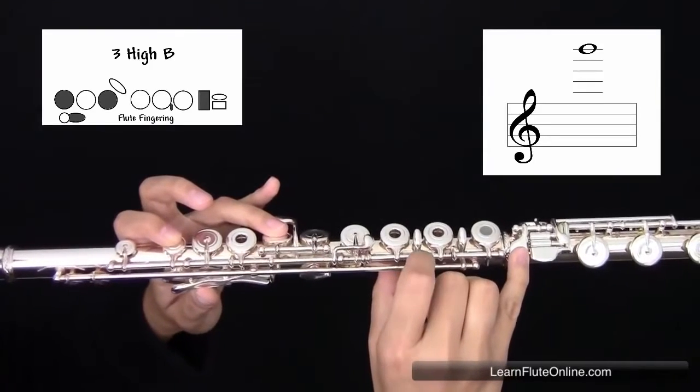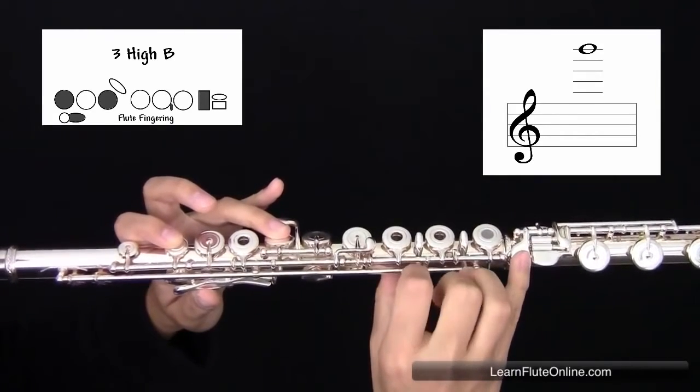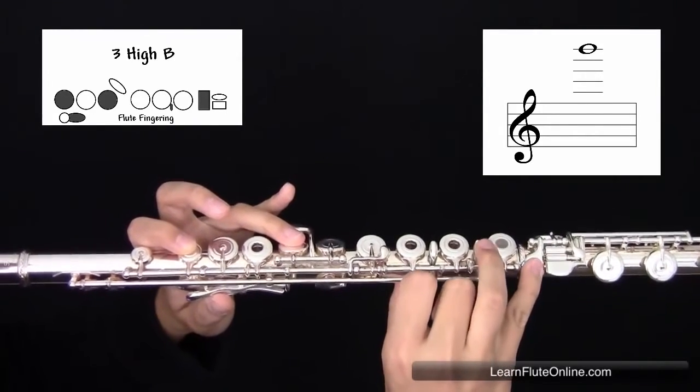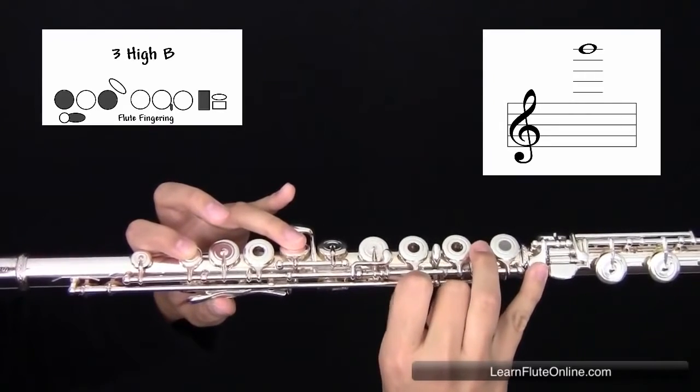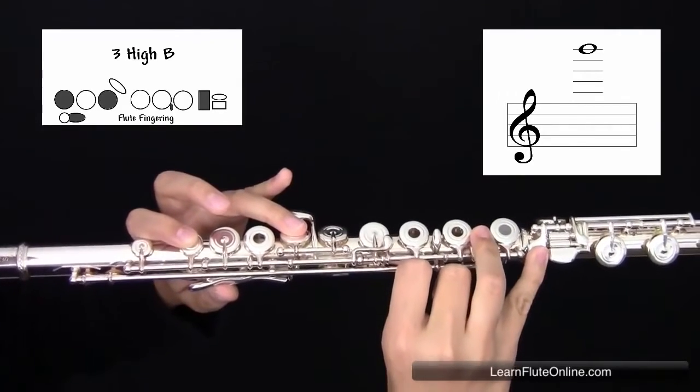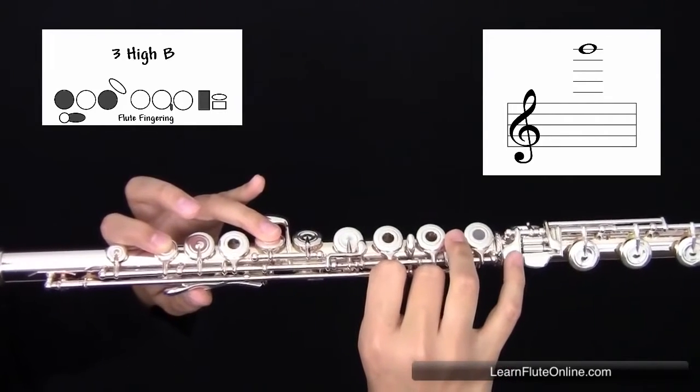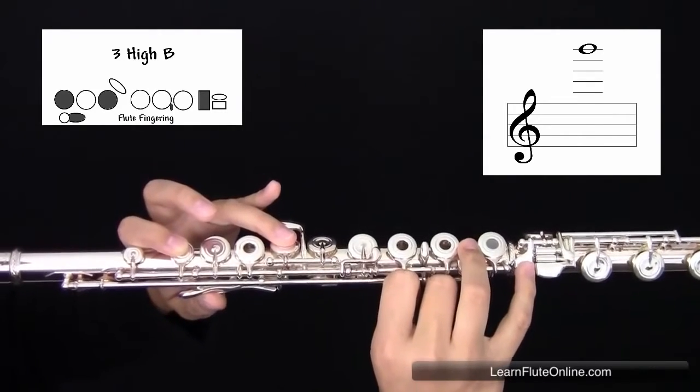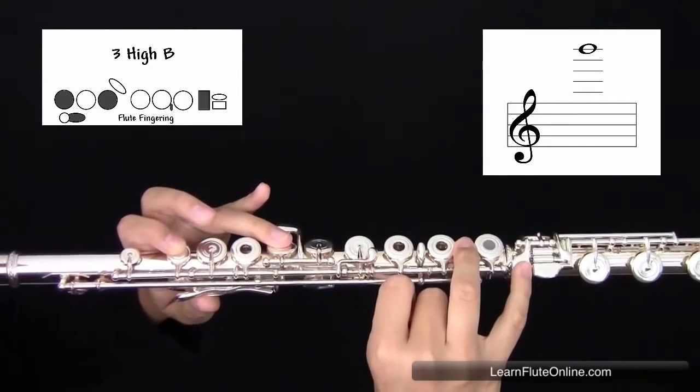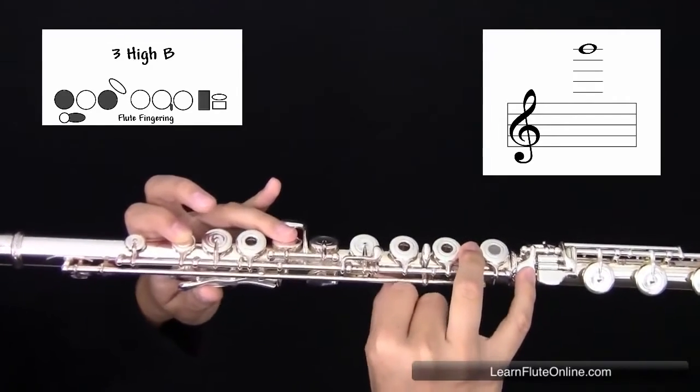In the right hand, skipping your first and second fingers, placing your third finger on the second trill key. Your right hand pinky is to be placed on the first key of the foot joint. You're going to blow with even faster air. It should sound like this.